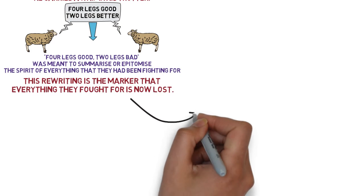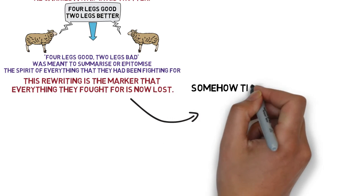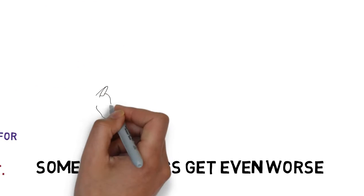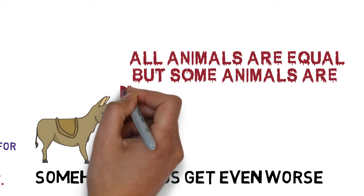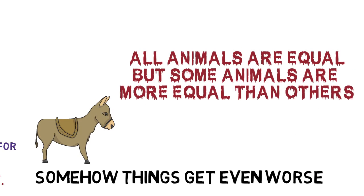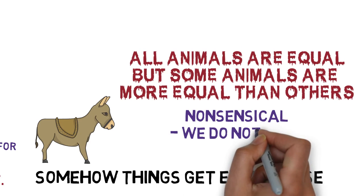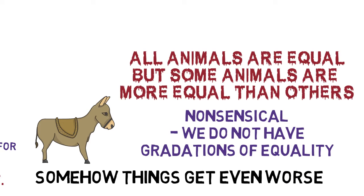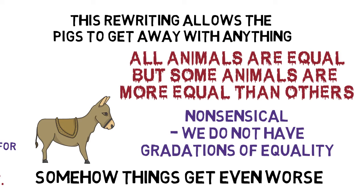Perhaps not everything is lost, because somehow things get even worse in this chapter. Benjamin agrees to read, and we learn that all of the commandments have been removed from the wall, replaced with a single line: 'All animals are equal, but some animals are more equal than others.' This quotation doesn't even really make sense — we do not get gradations of equality; you're either equal or you're not. The rewriting down to this one simple line has been done in such a way that it means the pigs can now get away with anything, which is exactly what they do.